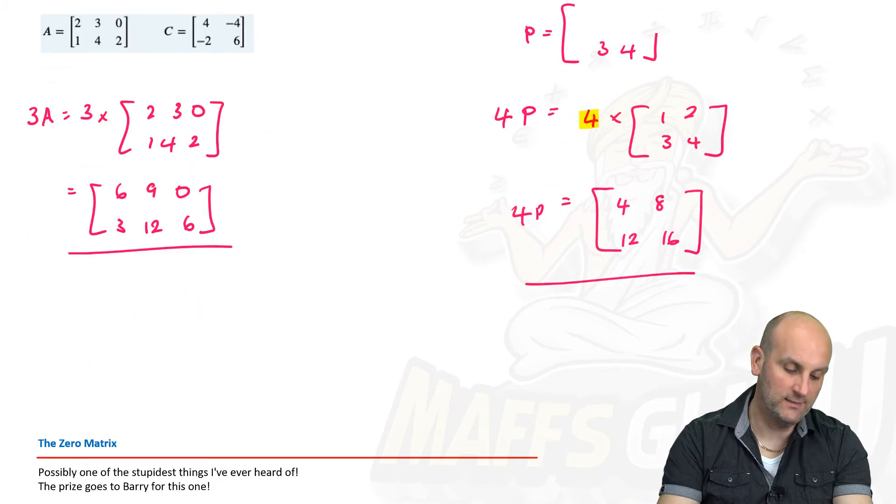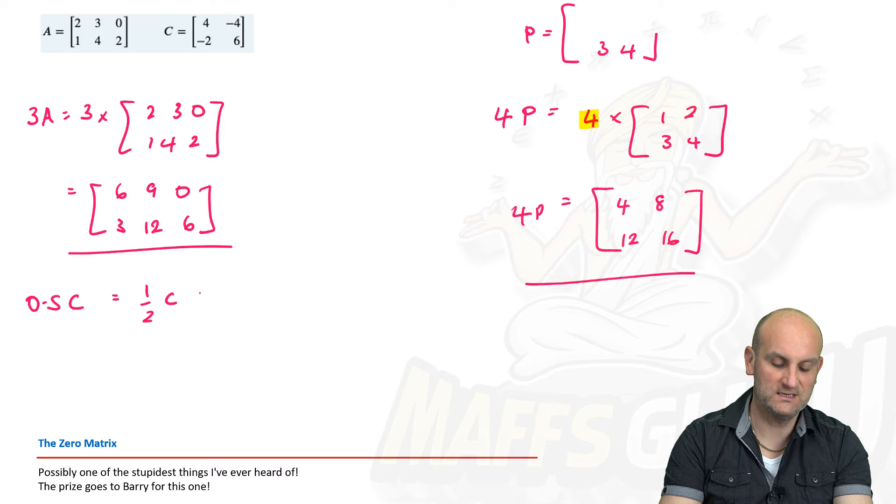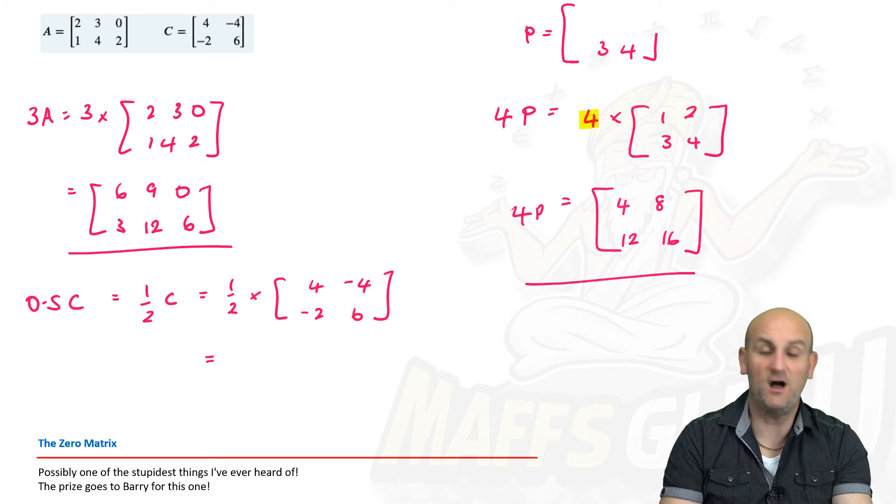Now, trying to trick me, they want 0.5c. Now, 0.5 is just the same as saying a half of c. And, bearing in mind I want c to be 4, minus 4, minus 2, 6, it's just asking you to half each of the numbers inside that matrix. So, 4, half of 4 is 2, half of minus 4 is minus 2, half of minus 2 is minus 1, and half of 6 is 3.